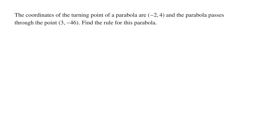Hey guys, in this video I'm going to go through an example of finding the equation of a parabola given that we have the coordinates of the turning point and one point. Reading this question, we've got: the coordinates of the turning point of a parabola are minus two, four, and the parabola passes through the point three, minus forty-six. Find the rule for this parabola.